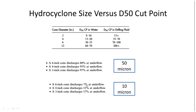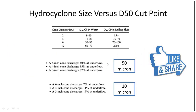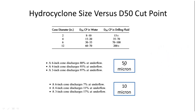We can see that as the cone diameter decreases, the percentage of fine particle removal is increasing. On the other hand, for the D50 cut point hydrocyclone, when the particle size is equal to or greater than the cut point, the smaller the cone size, the higher the solid discharge percentage for coarse solid particles more than the cut point.